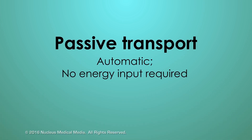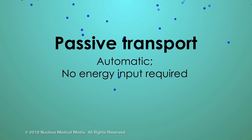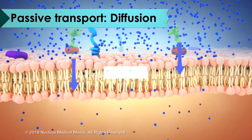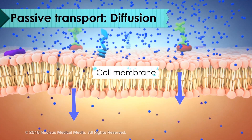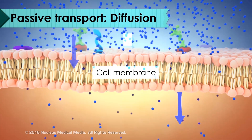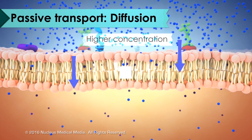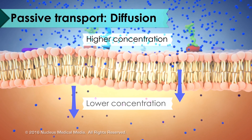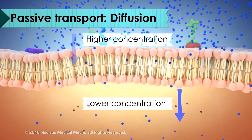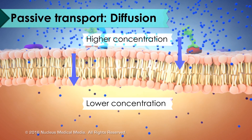The first category is passive transport. For a cell, passive transport means it's an automatic process that doesn't require any input of energy. For example, diffusion is a passive process in which particles move either into or out of the cell from an area of higher concentration to an area of lower concentration. The cell doesn't use any energy when this happens.